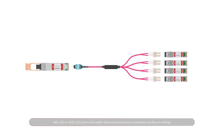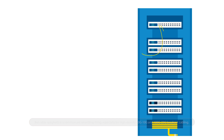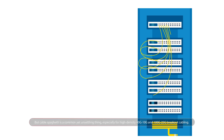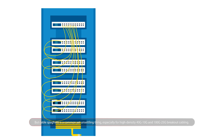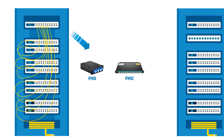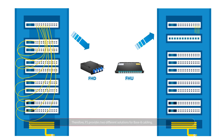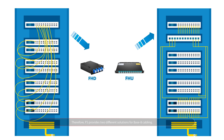40 to 10 gigabit and 100 to 25 gigabit transmissions commonly use base-8 cabling, but cable spaghetti is an unsettling problem, especially in such high-density environments. Therefore, FS provides FHD and FHU solutions for base-8 cabling, including both single-mode and multi-mode versions.